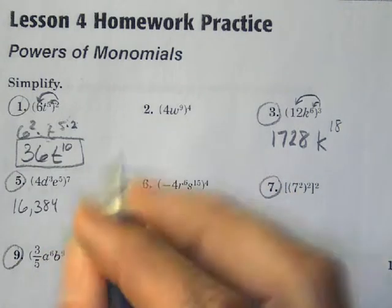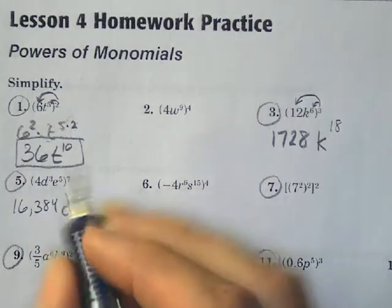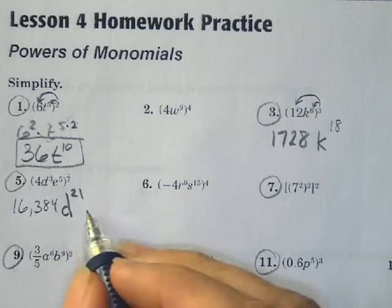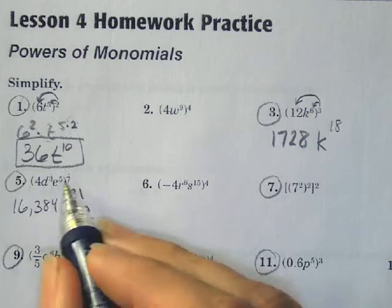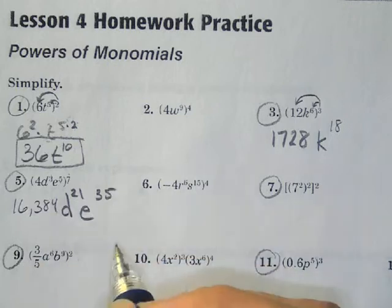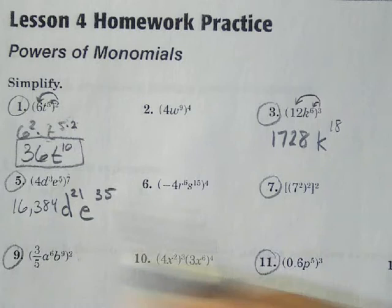The most important thing is that you're understanding what to do with the variables. So we have D, and we have 3 times 7, which is 21. And then we have E, which is 5 times 7 for 35. That's the most crucial part of this lesson today, not so much can you do 4 to the 7th power, because the calculator can do that for you.